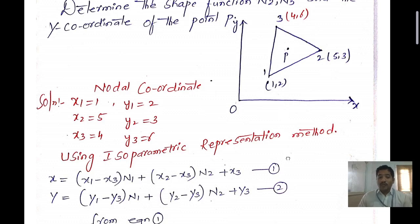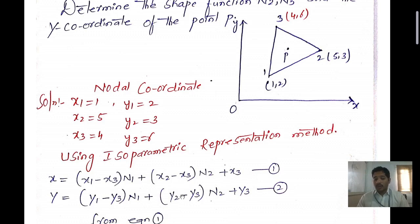We have to use the isoparametric representation method. The formula is: x = (x1 − x3)·n1 + (x2 − x3)·n2 + x3, considered as equation 1. Similarly, y = (y1 − y3)·n1 + (y2 − y3)·n2 + y3, considered as equation 2.